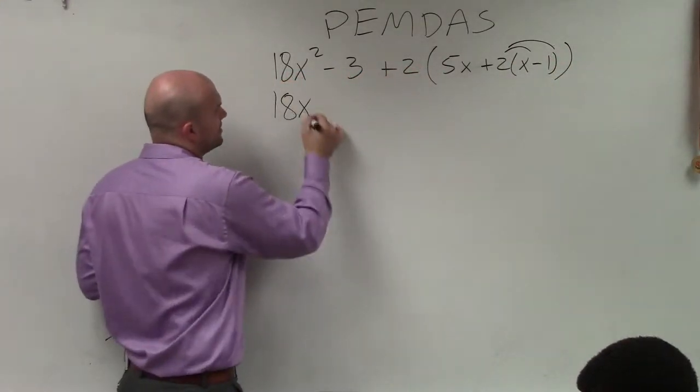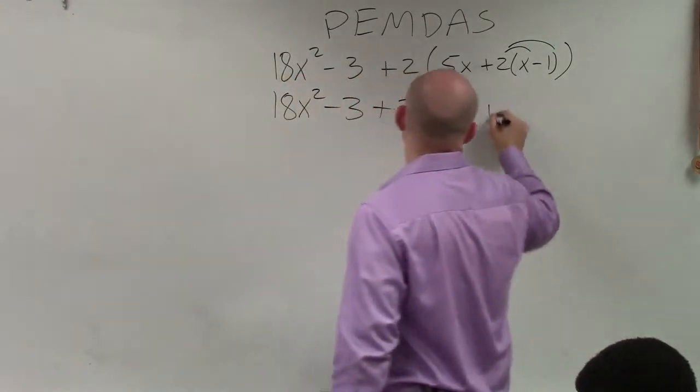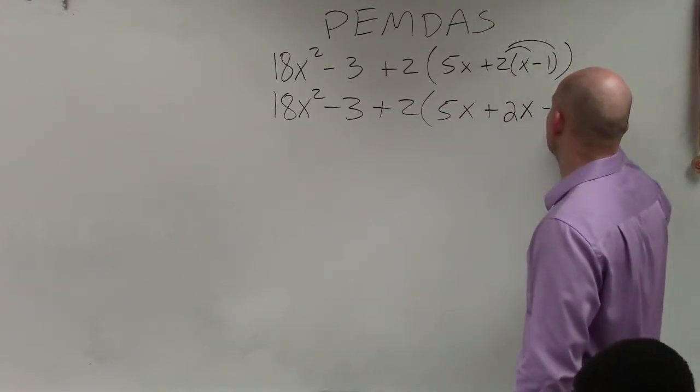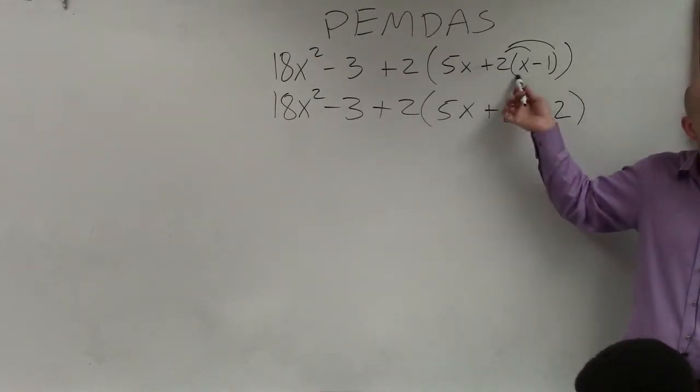Now I'm going to rewrite the whole problem again, just to make sure I'm not missing any steps. 2 times x is 2x, 2 times negative 1 is negative 2. So by applying the distributive property, I have eliminated that innermost parentheses.